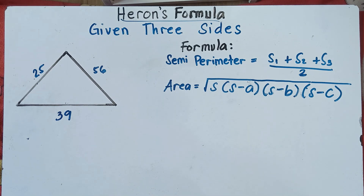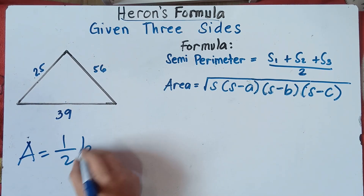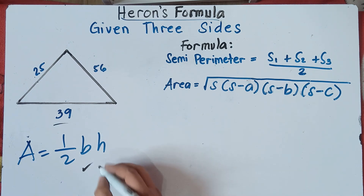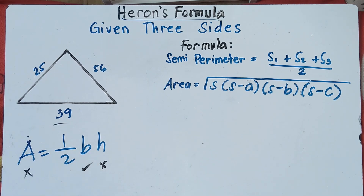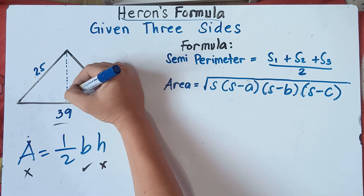Now, what if the teacher will ask you to find the area of a triangle given three sides? What will you do? Of course we know that to find the area of a triangle, the formula is area equals one-half base times height. So we do have the base, which is 39, but we don't have the height as well as we don't have the area. So we do have two unknowns. Our height there is this one, but we can actually find that height — it's quite tricky.